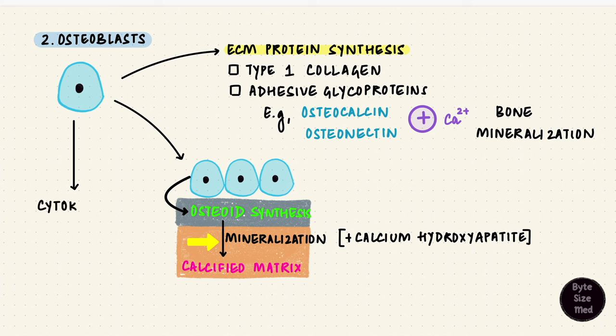Osteoblasts also produce cytokines like the macrophage colony stimulating factor and the receptor for the activation of nuclear factor kappa B ligand. Now this stuff sounds like gibberish for now but we will come back here. Osteoblasts are clearly very active cells and as such these cuboidal cells have got lots of rough endoplasmic reticulum and a well defined golgi apparatus.